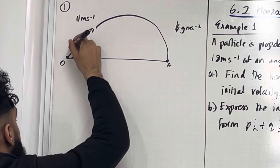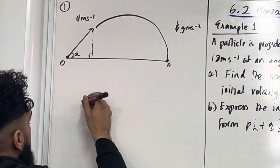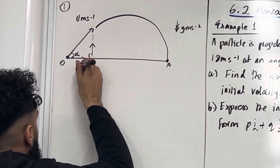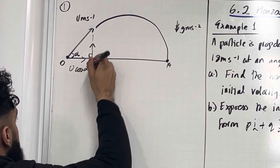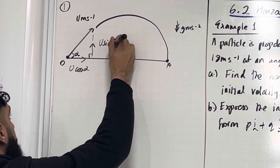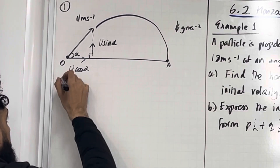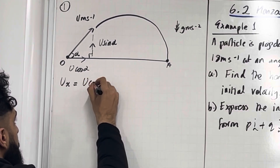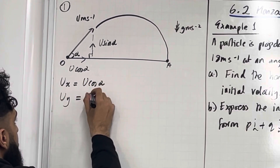For this initial velocity we can form a right-angled triangle. Putting in the arrows, the horizontal component will be u cos alpha, and the vertical component will be u sin alpha. This is the adjacent and this is the opposite. So ux, the horizontal component, is u cos alpha, and uy, the vertical component, is u sin alpha.